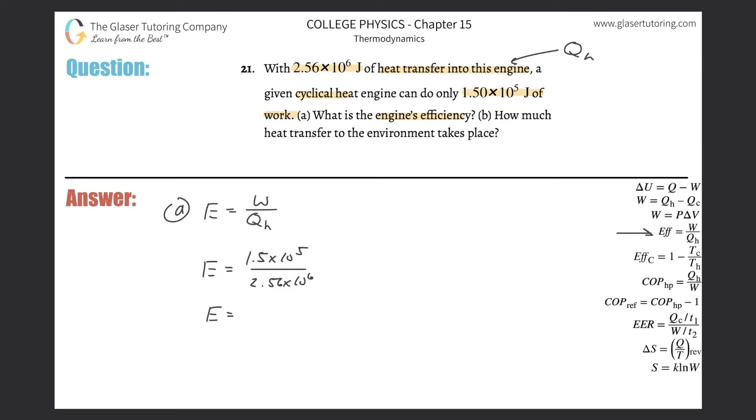Let's calculate it. So 1.5 times 10 to the 5th divided by 2.56 times 10 to the 6th. And we get a value of about 0.0586. You can convert that into percent, about 5.86%. That takes care of letter A.